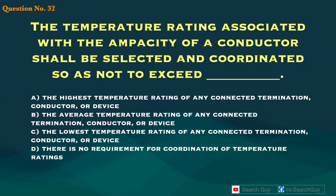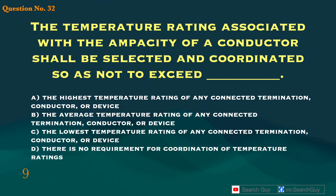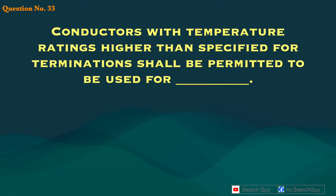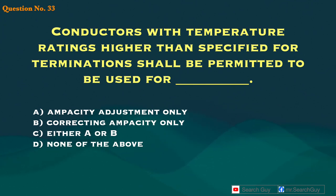Question 32. The temperature rating associated with the ampacity of a conductor shall be selected and coordinated so as not to exceed blank. A. The highest temperature rating of any connected termination, conductor, or device. B. The average temperature rating of any connected termination, conductor, or device. C. The lowest temperature rating of any connected termination, conductor, or device. D. There is no requirement for coordination of temperature ratings. Answer: C. The lowest temperature rating of any connected termination, conductor, or device.